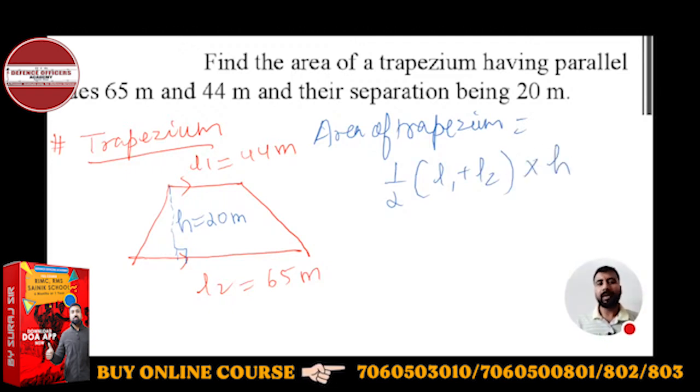If you put values here: half into sum of two parallel sides will be 65 plus 44 into height, which is 20.